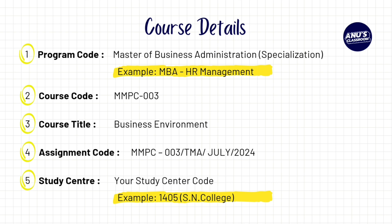Make sure all required details appear on your cover page regardless of which template you use. While filling out details, the program code is the name of your program — for example, MBA in HR Management or PGDM. The course code is MMPC3, the course title is Business Environment, and the assignment code can be found on your assignment question paper. Your study center code — for example, 1405 for SN College under RC Kochi — can be found on your IGNOU admit card or ID card.